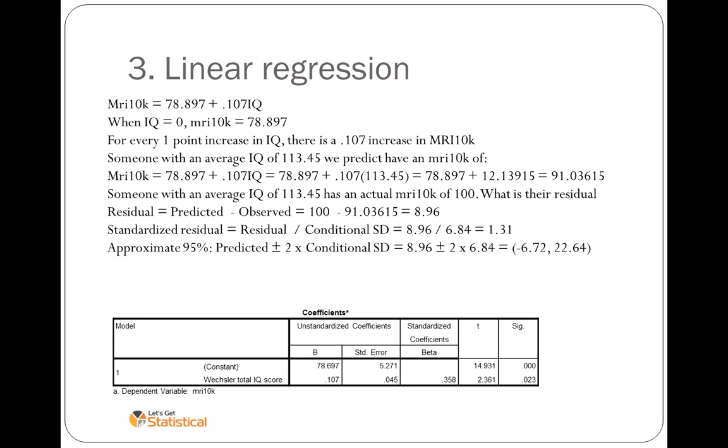We can also conduct a 95% confidence interval for someone's predicted point, which the formula is there. It follows the same sort of formula as the other confidence intervals.